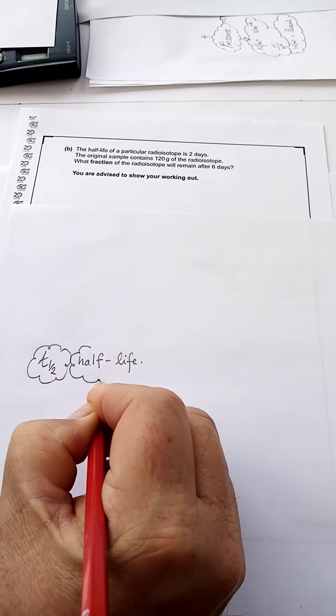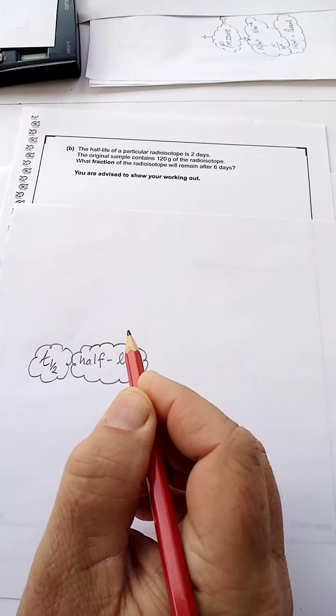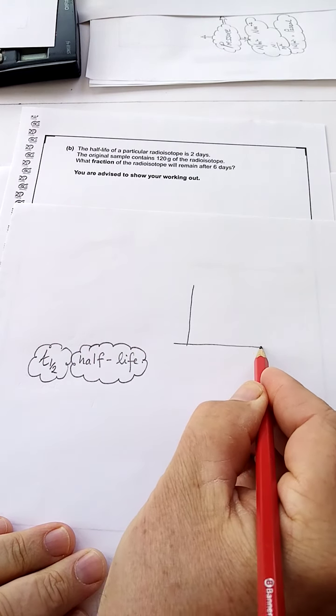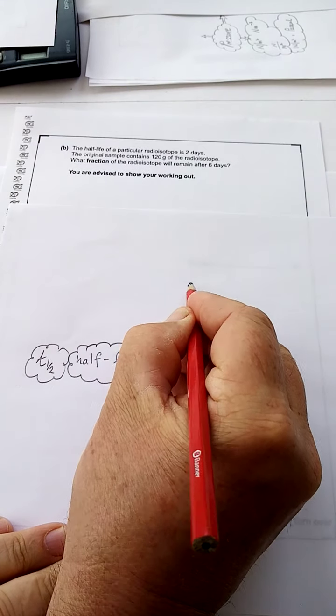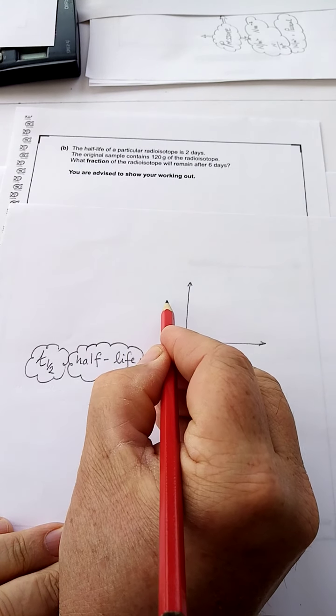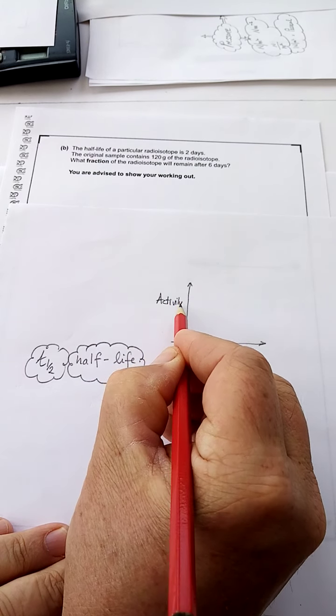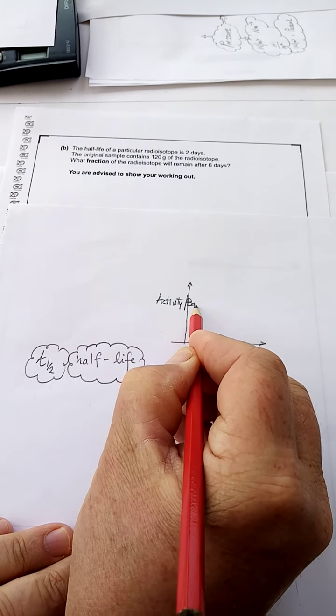The half-life is the time taken for half the radioactive nuclei to decay. So the thing about it is that they don't disappear, they change. And this change is shown by this graph where you would have your activity here, and the activity could be measured in Becquerels after the French scientist Henri Becquerel.